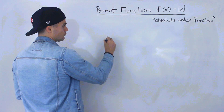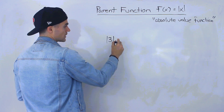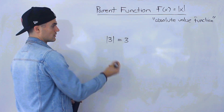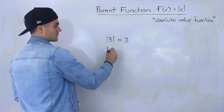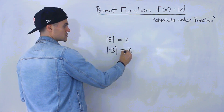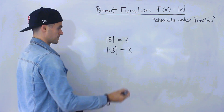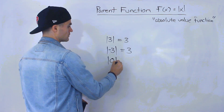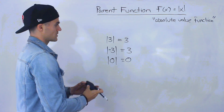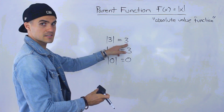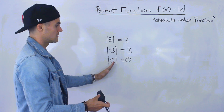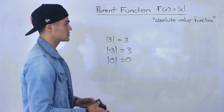So for example, if we have the absolute value of three, that's just going to equal three. But if we have the absolute value of negative three, it takes any negative number and turns it to a positive. Or the absolute value of zero is equal to zero. So any positive number keeps it the same, any negative number turns it to a positive, and the absolute value of zero is just zero.